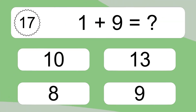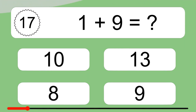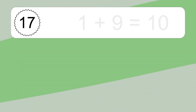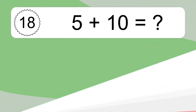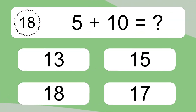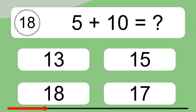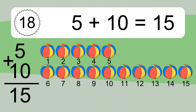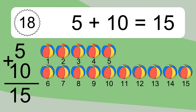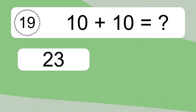1 plus 9 equals what? 1 plus 9 equals 10. Let's count it. 1, 2, 3, 4, 5, 6, 7, 8, 9, 10. 5 plus 10 equals what? 5 plus 10 equals 15. Let's count it. 1, 2, 3, 4, 5, 6, 7, 8, 9, 10, 11, 12, 13, 14, 15.